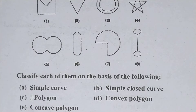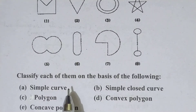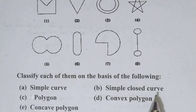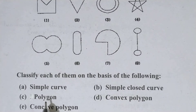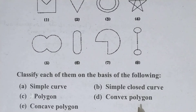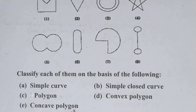Simple curve means 'sarala vakra rekha'. Simple closed curve — 'sarala vakra rekha'. Polygon — 'bahu bhuja kruti'. Convex polygon — 'bahir vakra bahu bhuja'. Concave polygon — 'antar vakra bahu bhuja'.